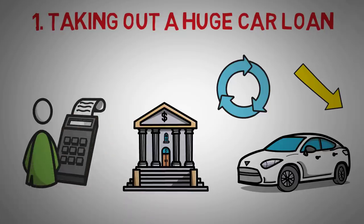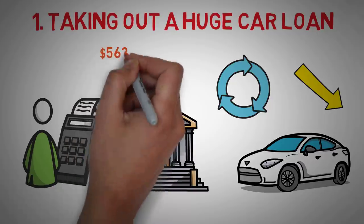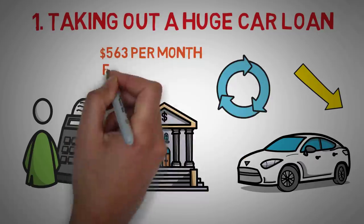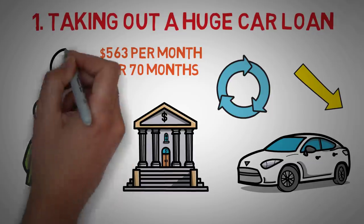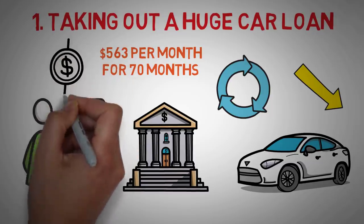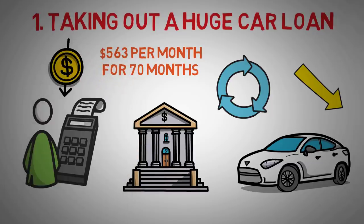According to LendingTree, the average new car payment in the United States is a whopping $563, with the average loan length being 70 months. Then once the car is finally paid off, its value is only a fraction of what it was purchased for.